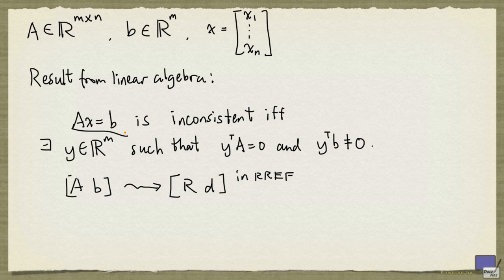Now, the system Ax equal to b is inconsistent if and only if there is a row in R of all zeros, whose corresponding right-hand side value is non-zero. Suppose that row is row i, that means row i of the matrix R has only zeros, and di is non-zero.